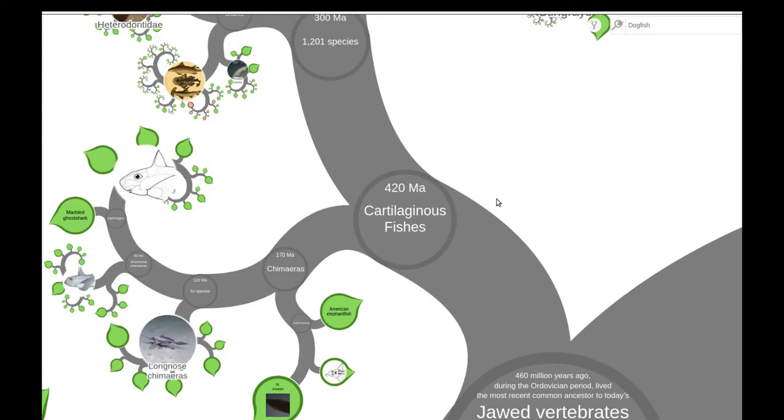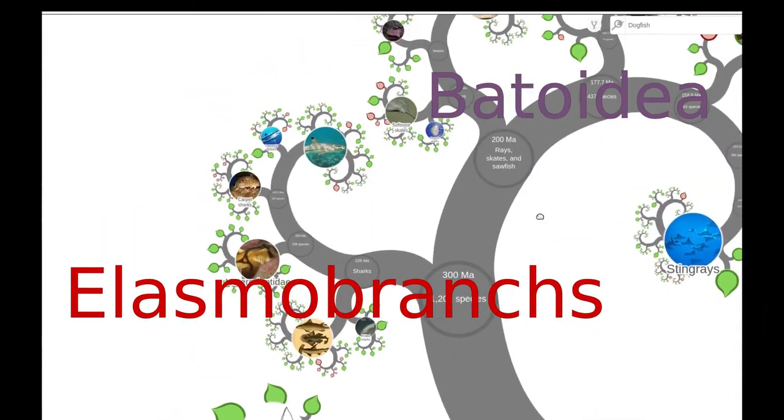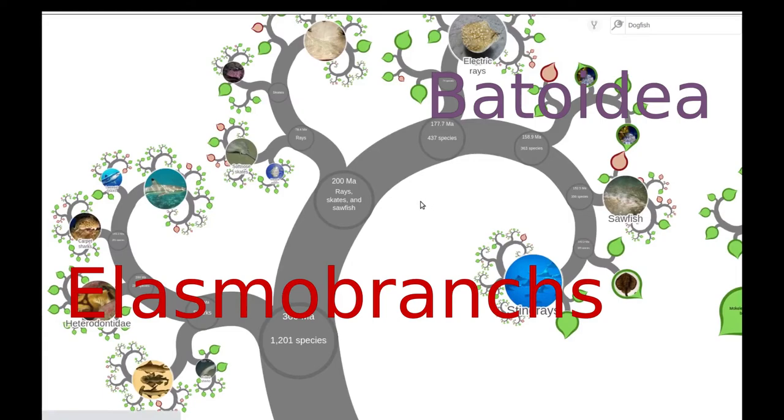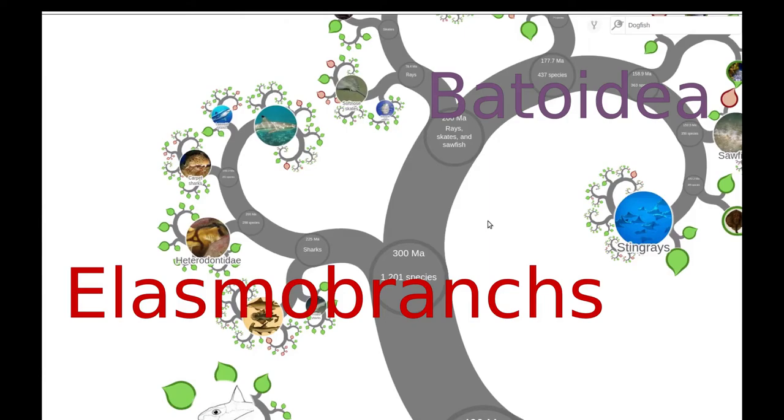Cartilaginous fish, or the chondrichthyes, are divided into two subclasses: the elasmobranchs, which are the sharks, and the batoidea, made up of rays and skates. It's the elasmobranchs, specifically the dogfish, that we'll be focused on today.